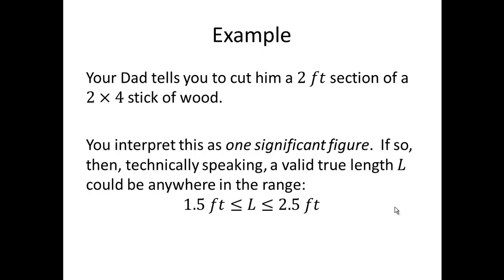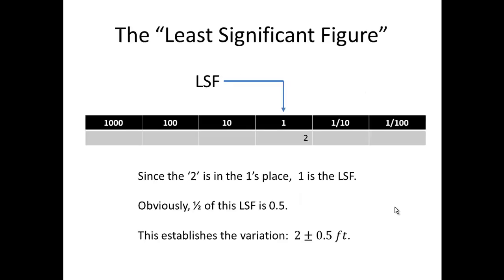Why is this? The two is in the ones place, and one is the least significant figure. So half of the least significant figure is 0.5. This establishes the range to plus or minus a half a foot.